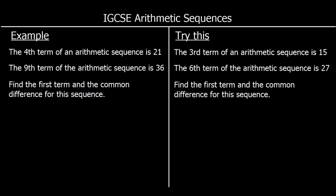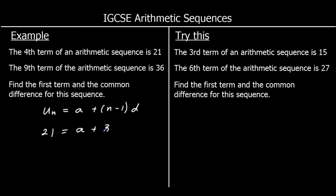This example says the fourth term of an arithmetic sequence is 21 and the ninth term is 36; find the first term and the common difference. We're going to use uₙ = a + (n−1)d. The fourth term gives us: 21 = a + 3d. The ninth term gives us: 36 = a + 8d.